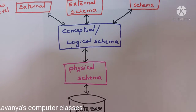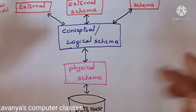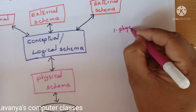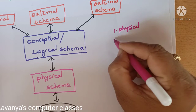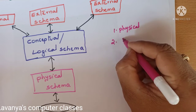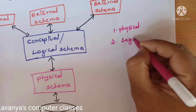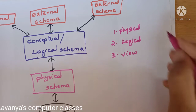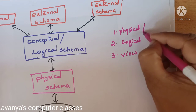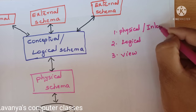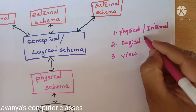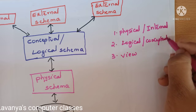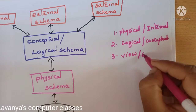This is the diagram for three-level architecture. The three levels are: first level is physical level, also called physical schema or internal level. Second one is logical level, also called logical schema or conceptual level. Third one is view level, also called view schema or external level.